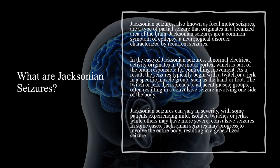Jacksonian seizures, also known as focal motor seizures, are a type of partial seizure that originates in a localized area of the brain. Jacksonian seizures are a common symptom of epilepsy, a neurological disorder characterized by recurrent seizures. In the case of Jacksonian seizures, abnormal electrical activity originates in the motor cortex, which is the part of the brain responsible for controlling movement.